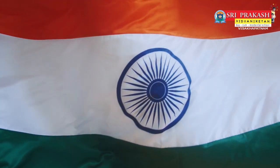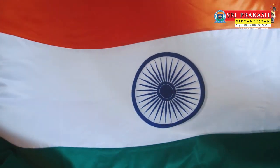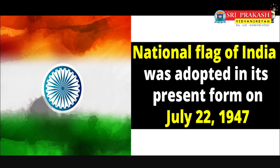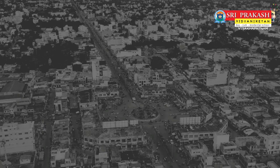The centre of the Indian flag contains the Ashoka Chakra, which has 24 spokes and is blue in colour. It is a representation of constant movement and progress. The flag was adopted in its present form during a meeting of the Constituent Assembly on July 22, 1947.